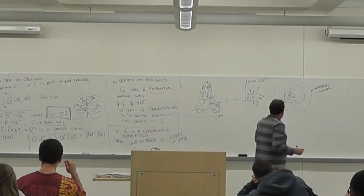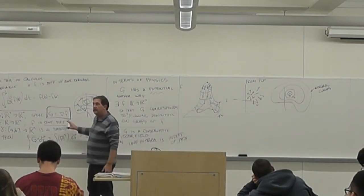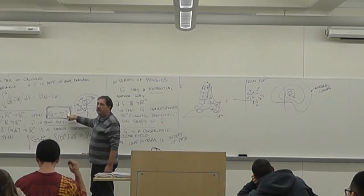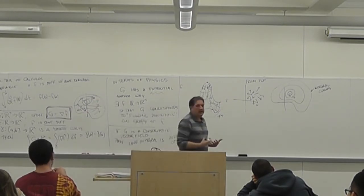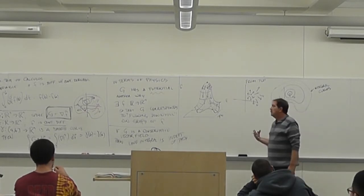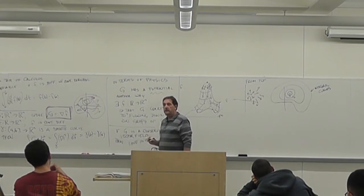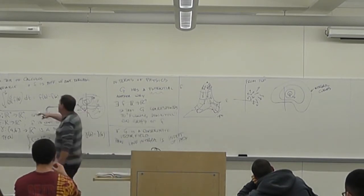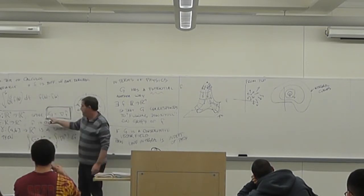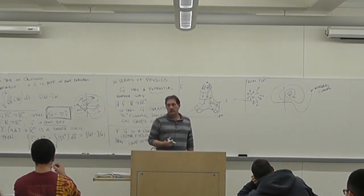So this is a version of the fundamental theorem of calculus. One thing that's different here is we have this condition: g has to be the gradient of something. It isn't always true. So there are vector fields which are not gradients — there are functions for which the fundamental theorem doesn't hold. But it's very easy to construct functions of more variables which are not gradients.